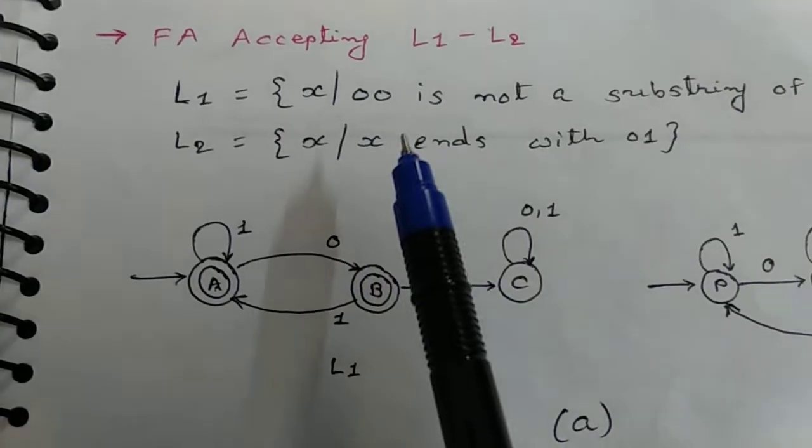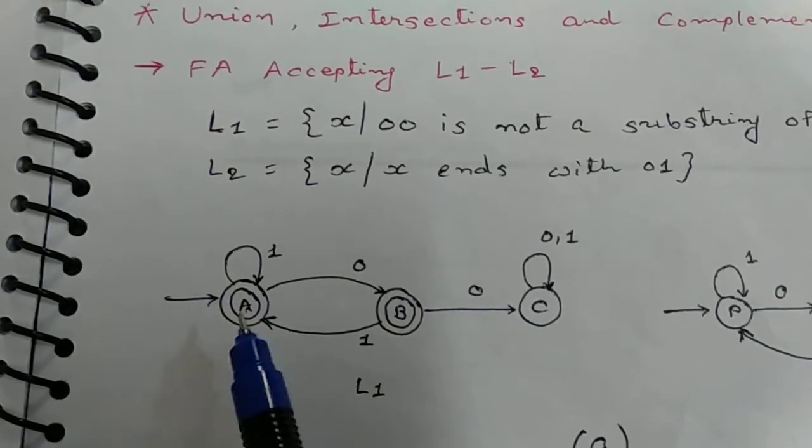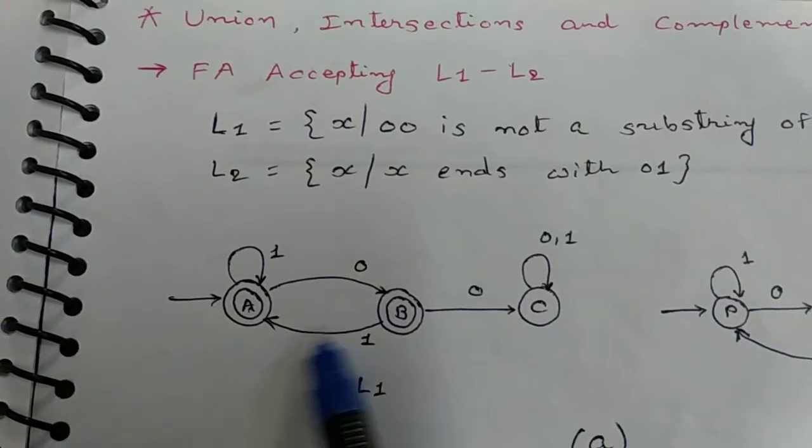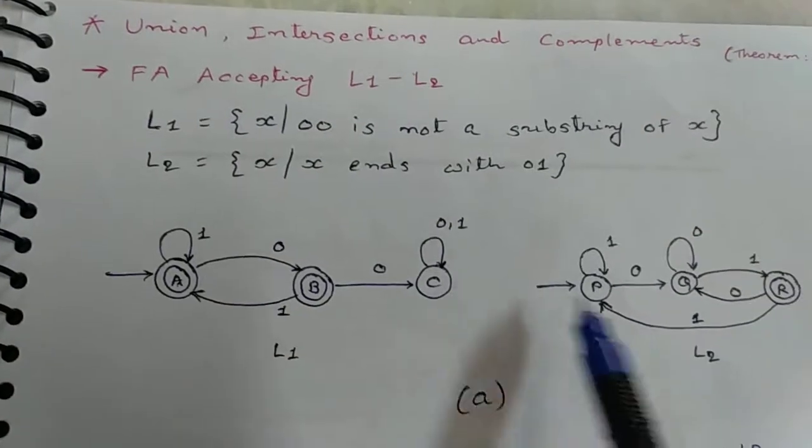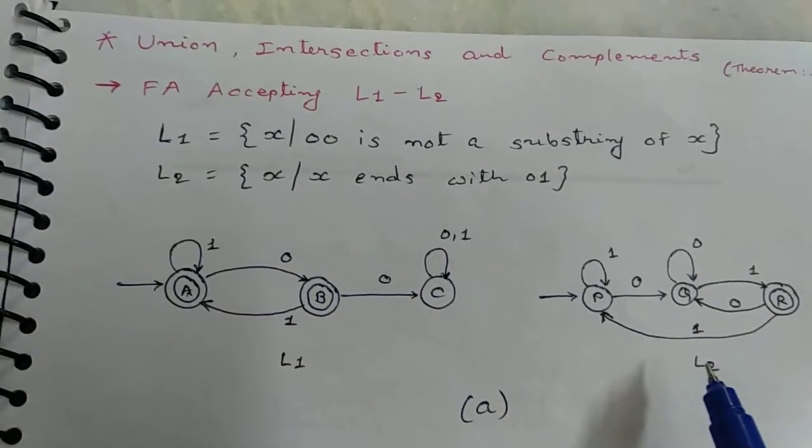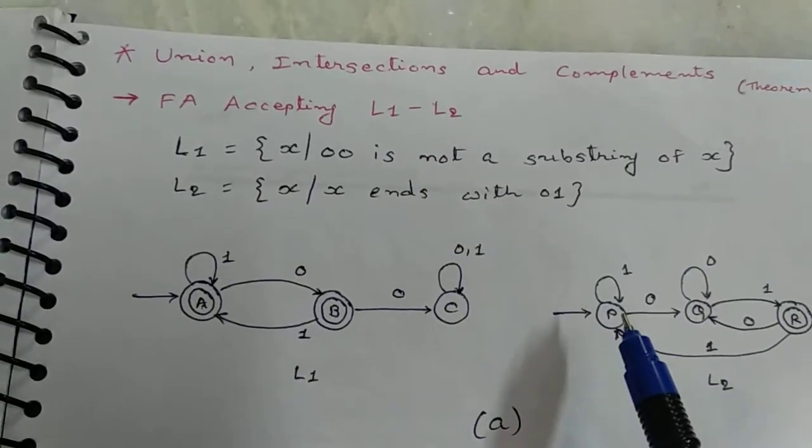Equivalent of L1 language, finite automata is here. 00 is not a substring of X, and equivalent of L2 language, X ends with 01.